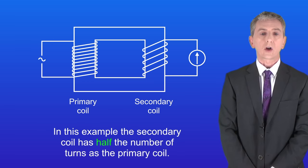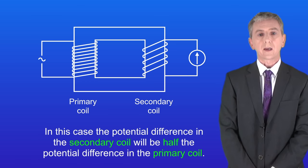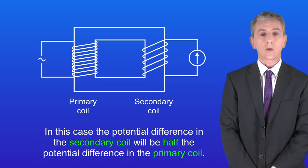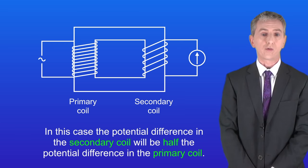In this example, the secondary coil has half the number of turns as the primary coil. So in this case, the potential difference in the secondary coil will be half the potential difference in the primary coil.